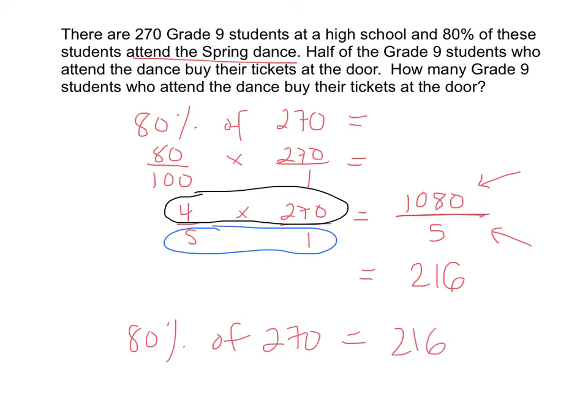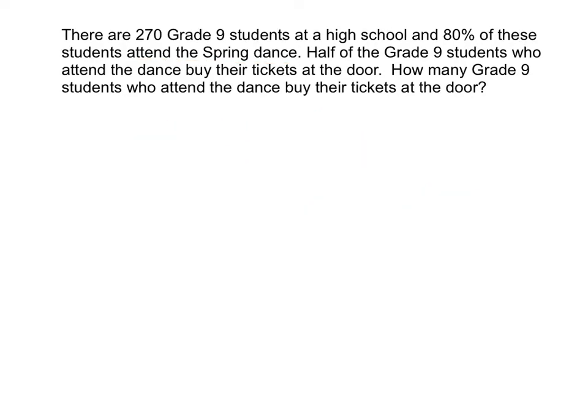What do we need to do next? What else does the question tell us? This question also tells us that half of the students who attend the dance buy their tickets at the door, and we need to figure out how many that is. So how can we represent half as a percentage and a fraction? Remember, percent is always out of 100. What's half of 100? 50. So 50% represents half — 50 out of 100.